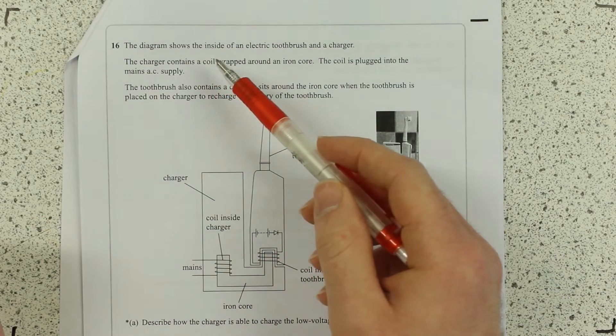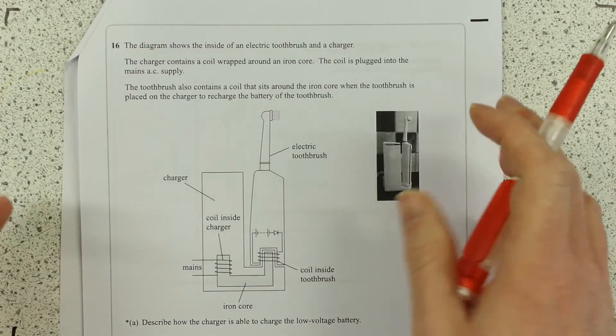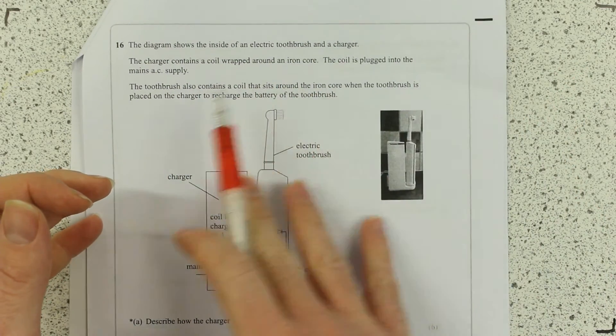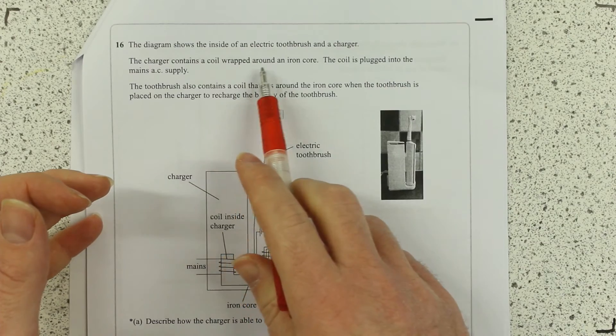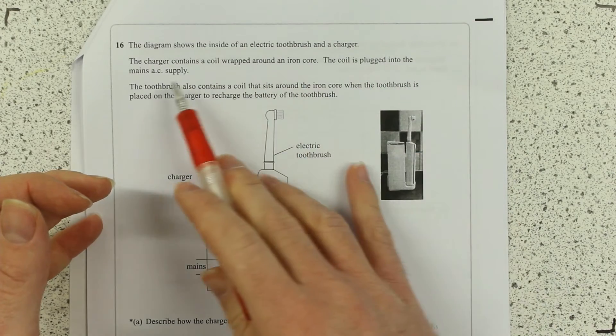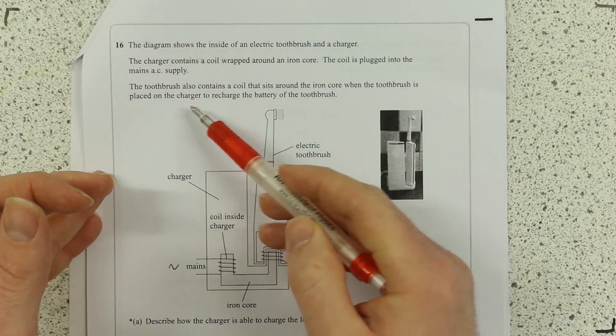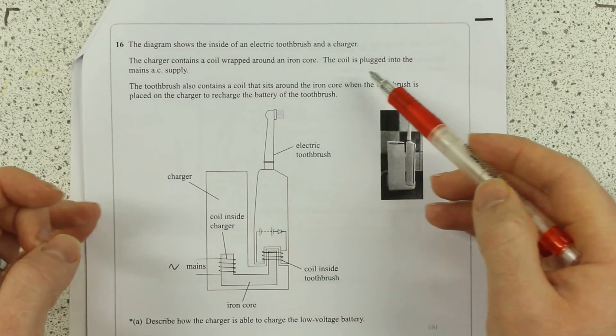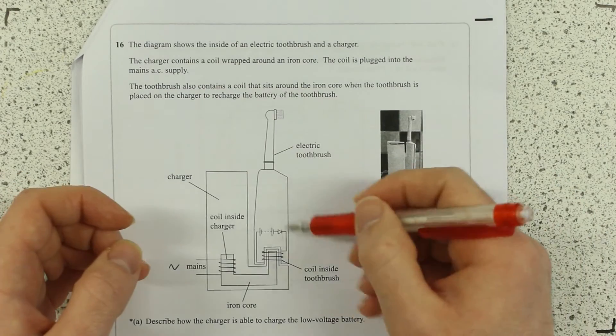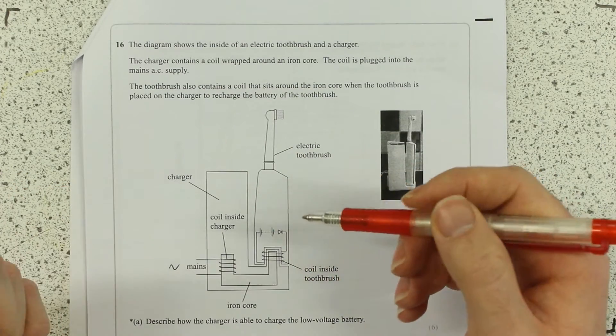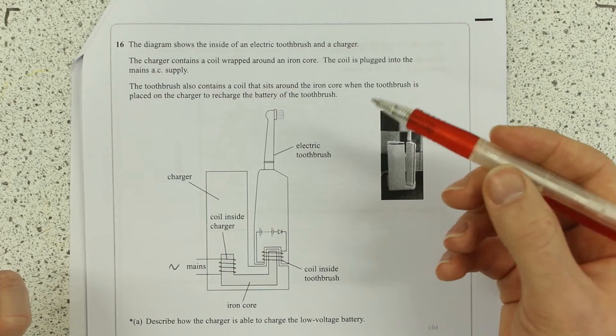Okay, so diagram shows inside electric toothbrush and charger. Charger contains coil wrapped around the iron core, you have to see that. Coil is plugged into AC, so we know that is AC. A toothbrush also contains a coil that sits around the iron core when the toothbrush is placed on the charger to recharge the battery. So this is a recharge circuit in there of the toothbrush.